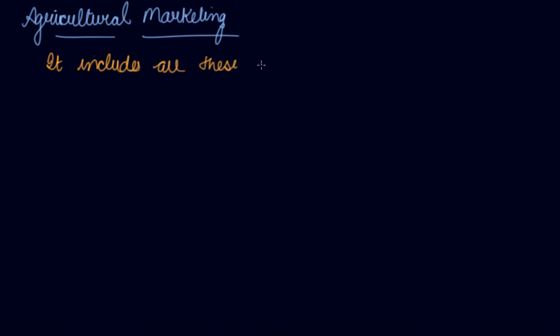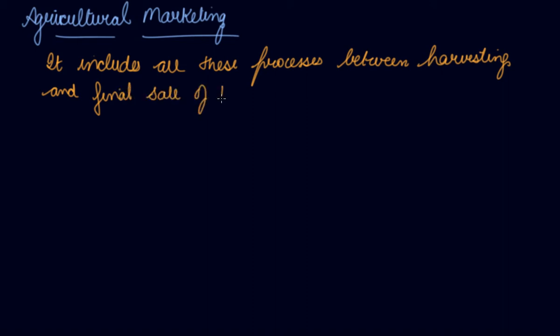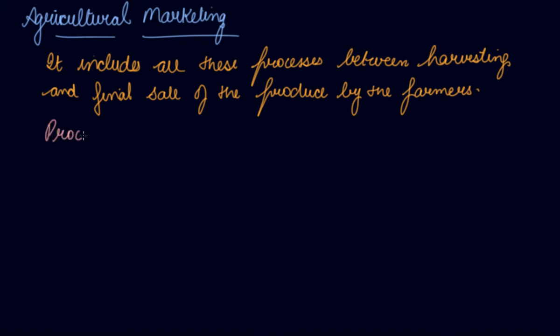So, agricultural marketing includes all these processes between harvesting and the final sale of the produce by the farmers. Agricultural marketing may be defined as a process that includes: number one, gathering the produce after harvesting.